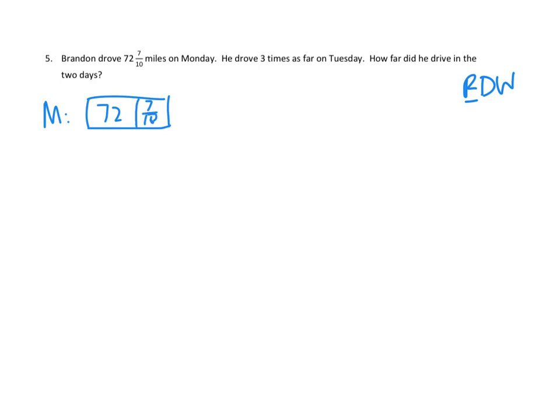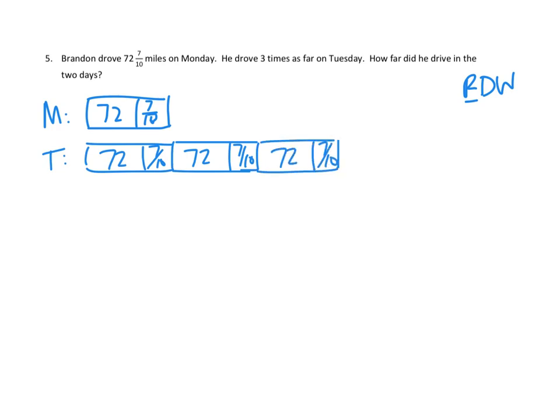Sorry, my tens a little sloppy. He drove three times as far on Tuesday. So on Tuesday, he drove the original amount, which is 72 and 7 tenths. But he drove three times as far. So I'm going to draw a couple more of these, 72 and 7 tenths, and another one, 72 and 7 tenths. Let's see if that confirms what we know so far. Brandon drove 72 and 7 tenths miles on Monday. Good. He drove three times as far, one, two, three, as far on Tuesday.